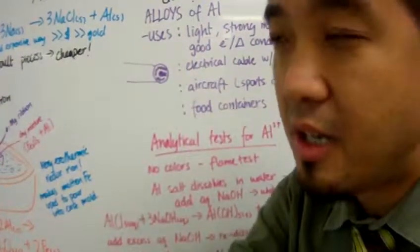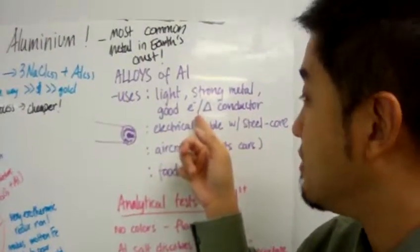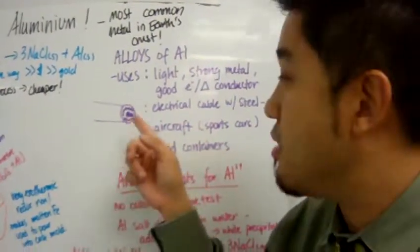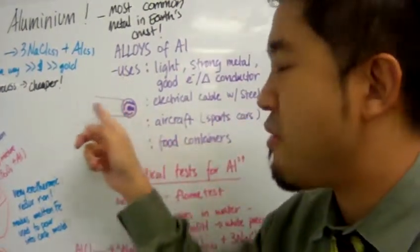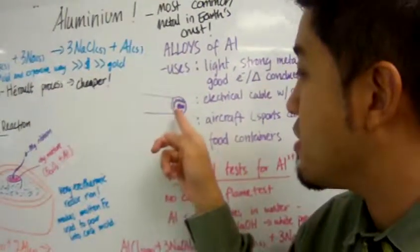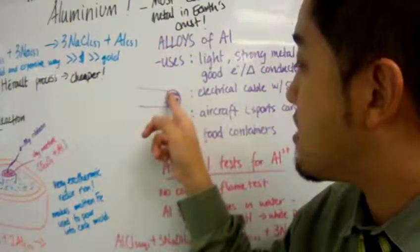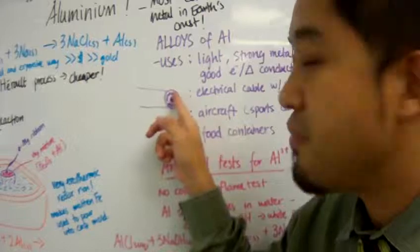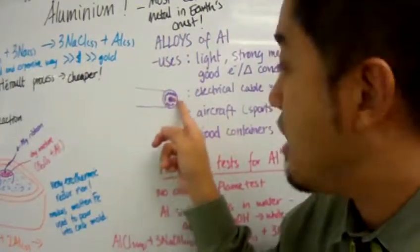Aluminum is light, strong when it's an alloy, and is a good conductor of electricity and heat. Aluminum can also be used as an electrical cable with a steel core. Here you have high wire electrical cables with insulation on the outside, then these little dots—that's your aluminum wiring—and then your steel core right in the middle.